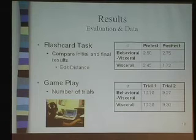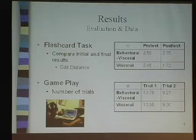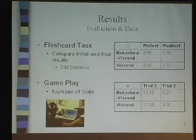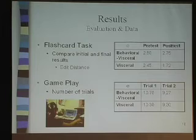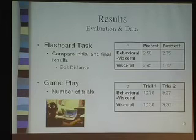From the flashcard task, we measured groupings using a concept called added distance — meaning from the groupings they made, we measured how many card manipulations it would take to form the correct structure with all clothing items in one category and all toys in another. From the pretest, it seems like everyone needed about 2.5 manipulations, but in the visceral version post-test, they only needed 1.72. We're still collecting data, so this is something we'll continue to look at. In the gameplay, we also recorded the number of trials each child needed to correctly classify all items in the room — these numbers are looking very similar, so we'll need to do more data analysis.